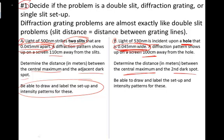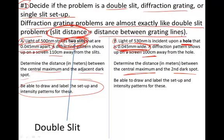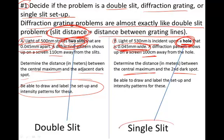Step one is to decide if the problem is a double-slit, diffraction grating, or a single-slit setup. In this particular problem, we're looking at a double-slit because Example A shows that we've got two slits. For diffraction gratings, it's almost exactly like the double-slit problems — just realize that for the double-slit, we're looking at the distance between the two slits as opposed to the distance between grating lines. Example B is a single-slit, and we know that because it's just a single hole, which is essentially what a single-slit is.